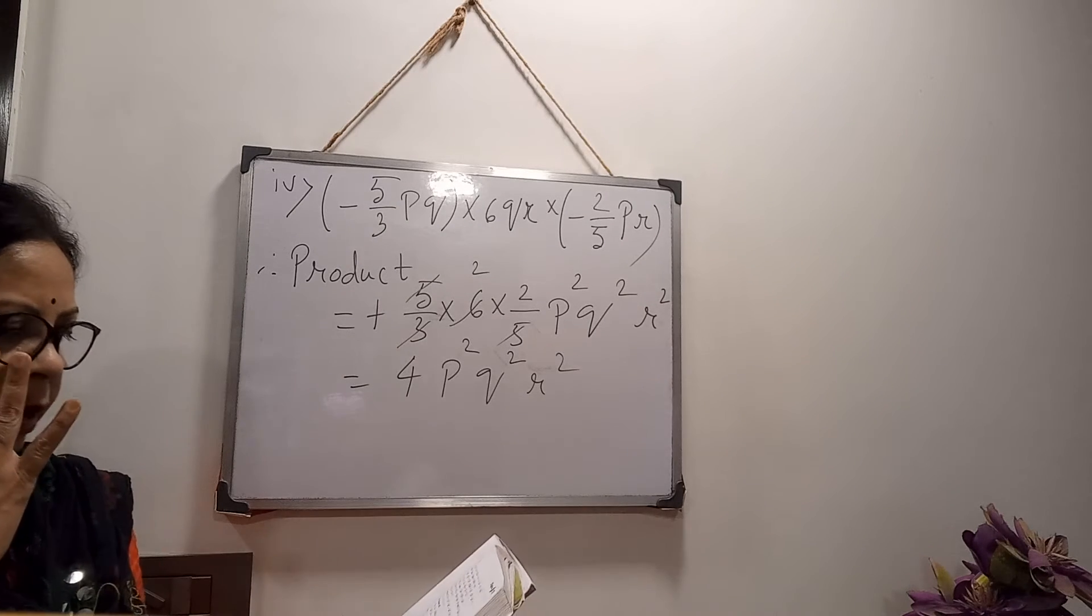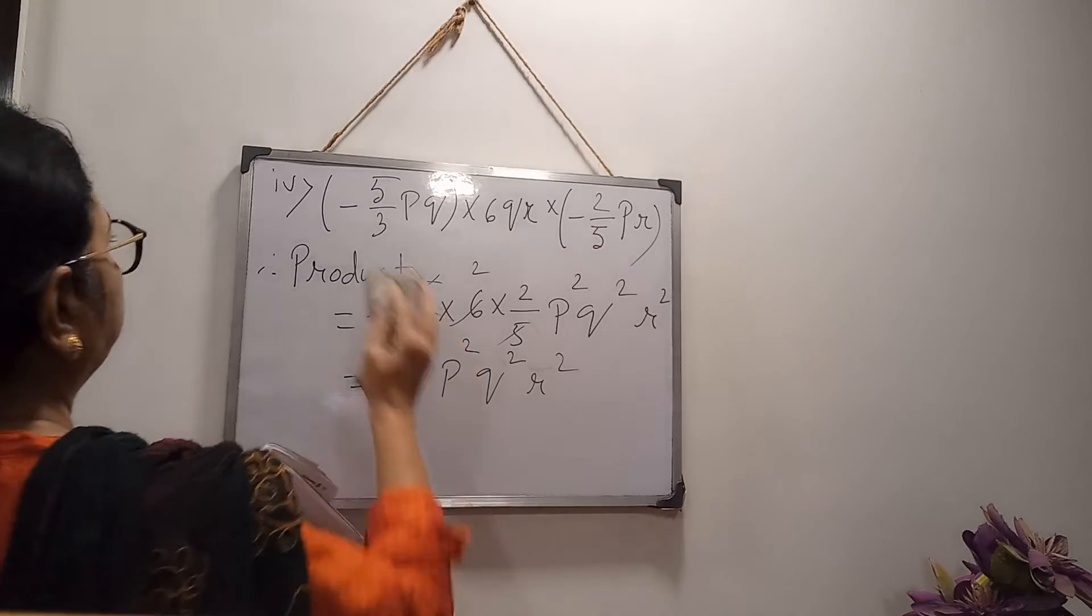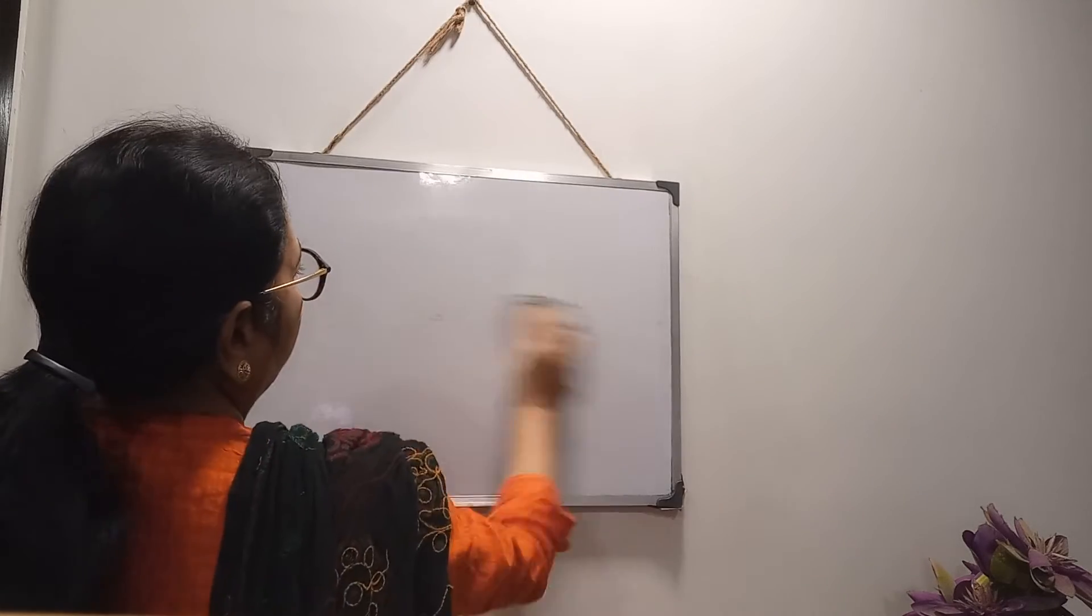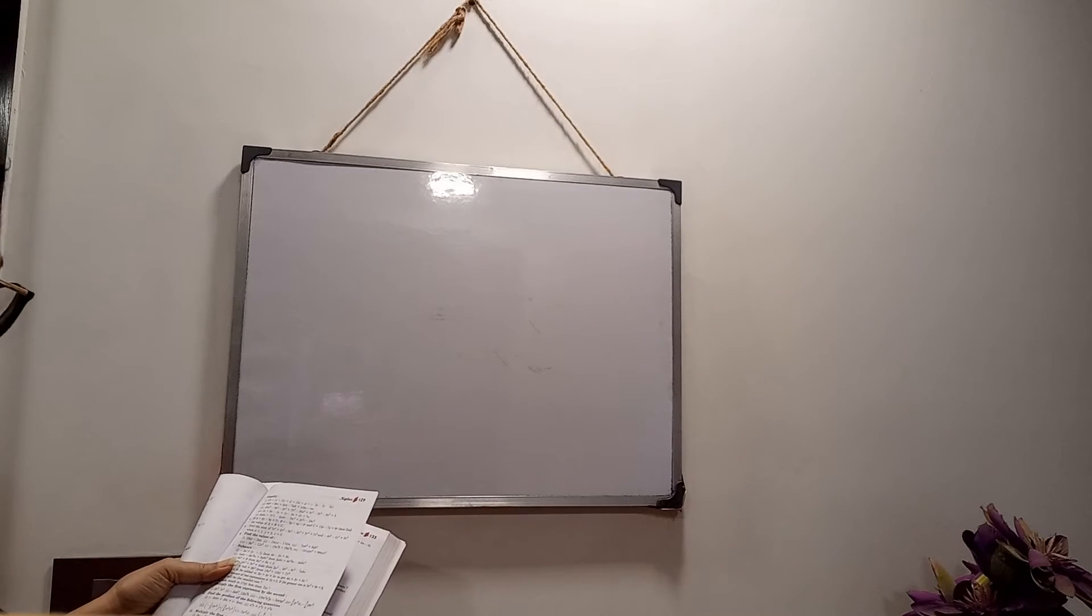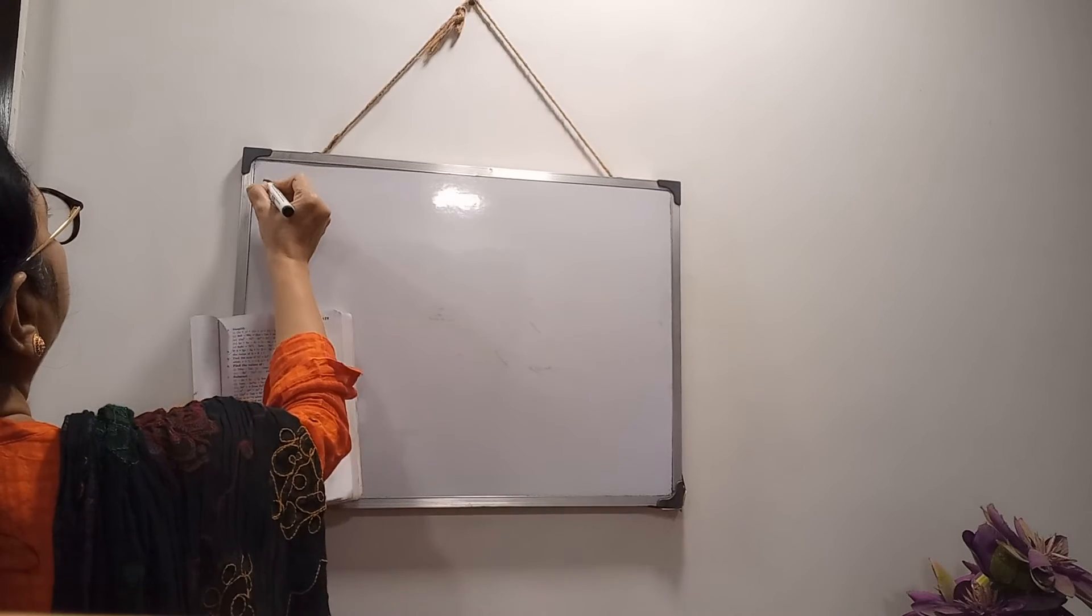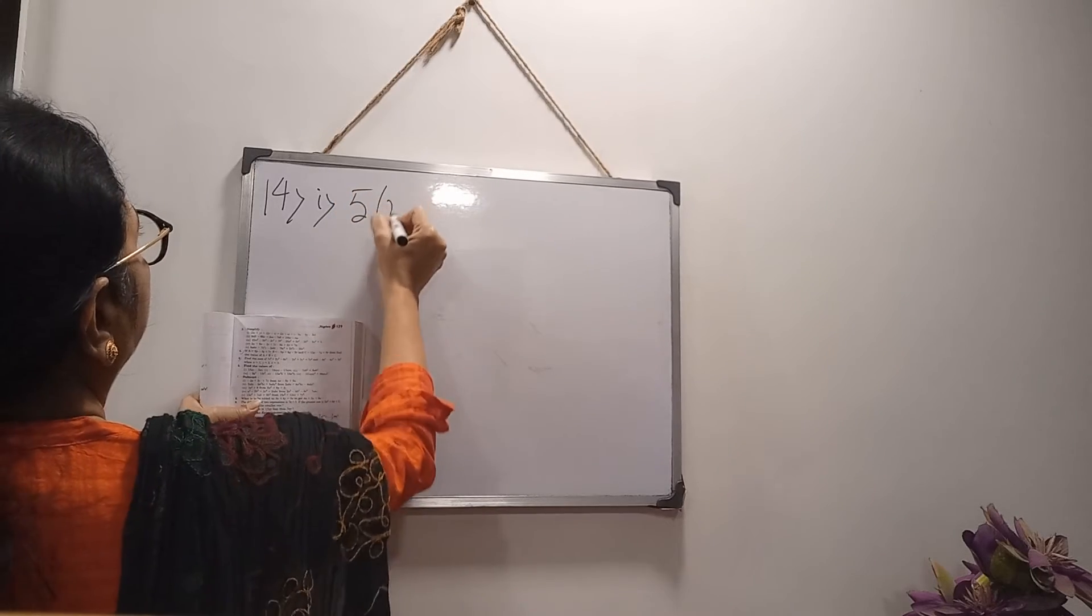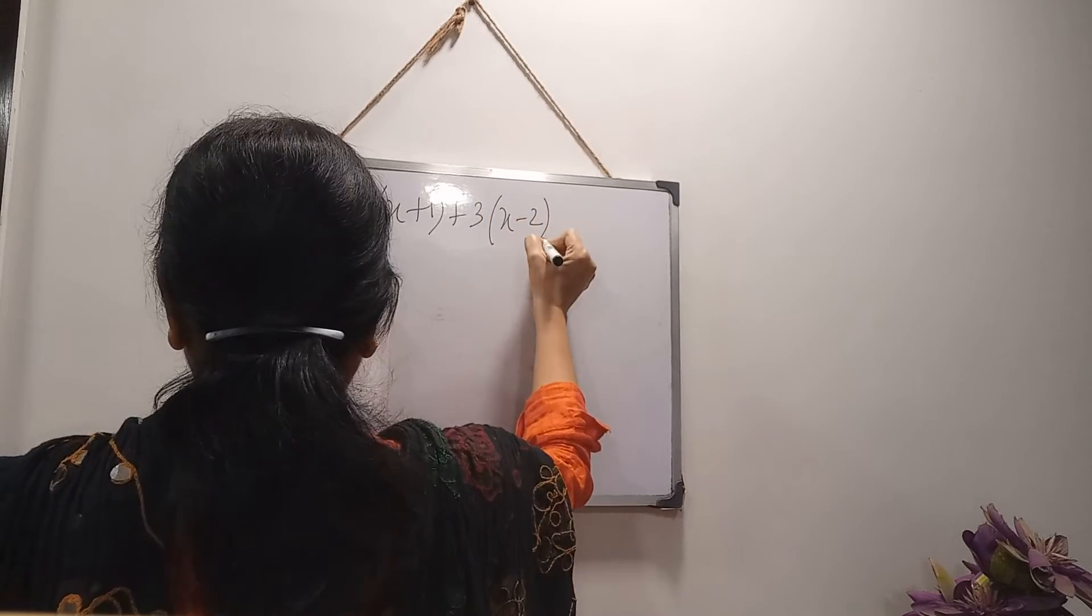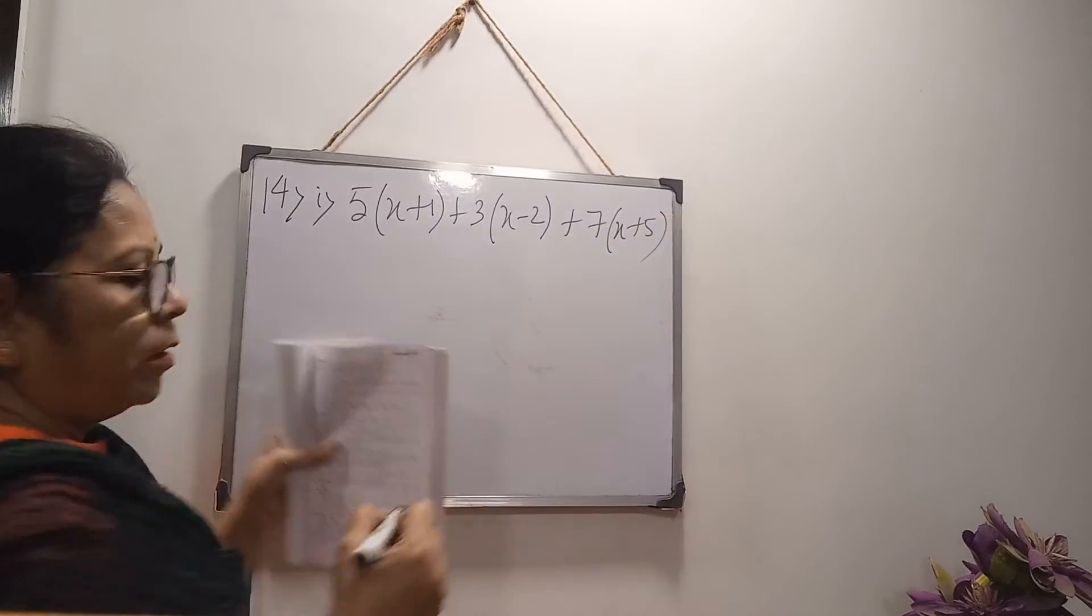Multiply the first quantity by the second. Number 3 you will do yourself. Then moving to simplify. Simplify. 5 times x plus 1, plus 3 times x minus 2, plus 7 times x plus 5. So first what to do? We will open the bracket by multiplication.